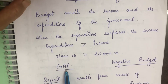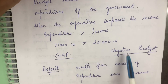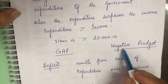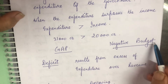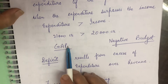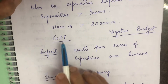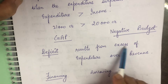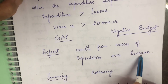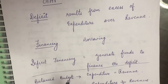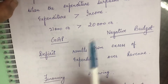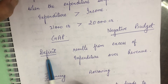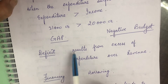This gap, whenever it arises, is called a negative budget. Negative budget symbolizes that expenditure is more and income revenue is less. This gap is called deficit — deficit means this gap which results from the excess of expenditure over revenue. It's quite clear that when expenditure is more and income is less, that gap is created, and another name for this gap is deficit, meaning a shortfall.